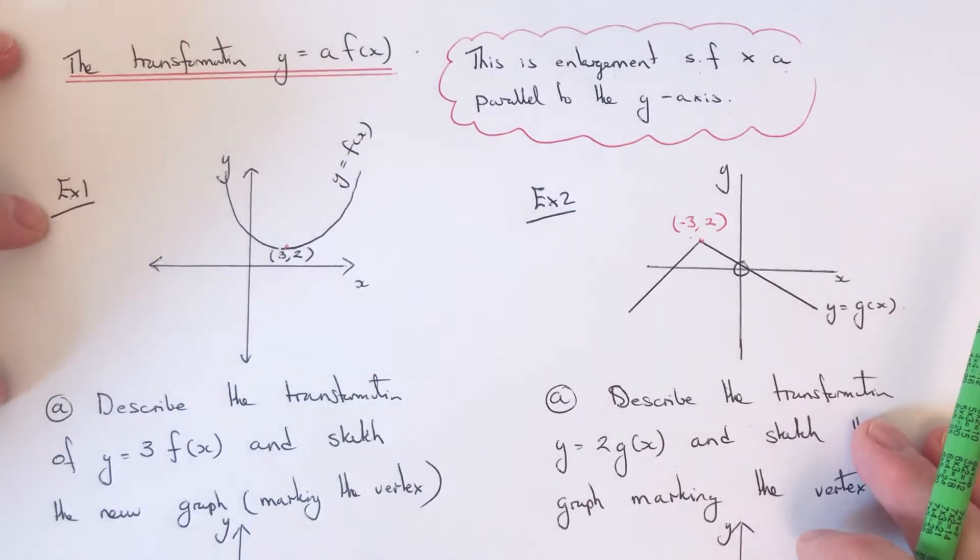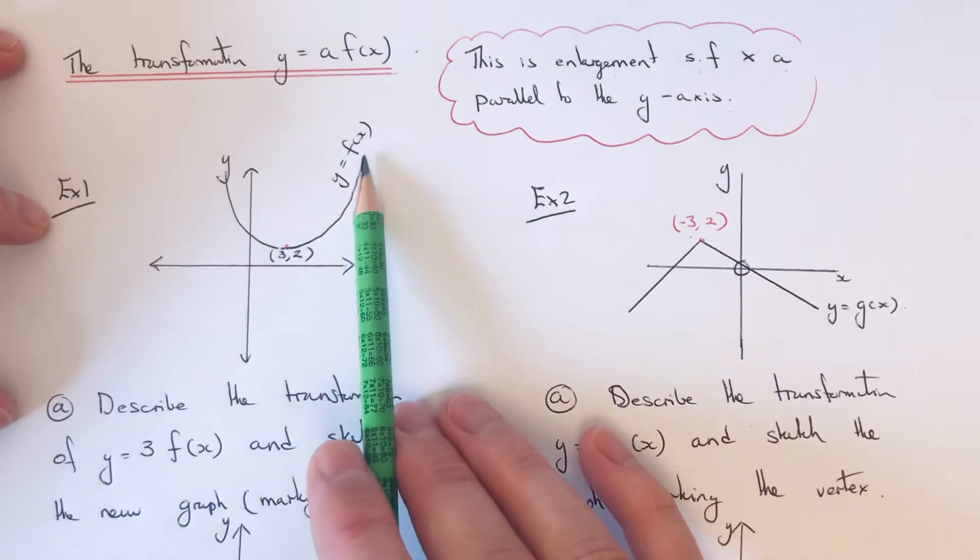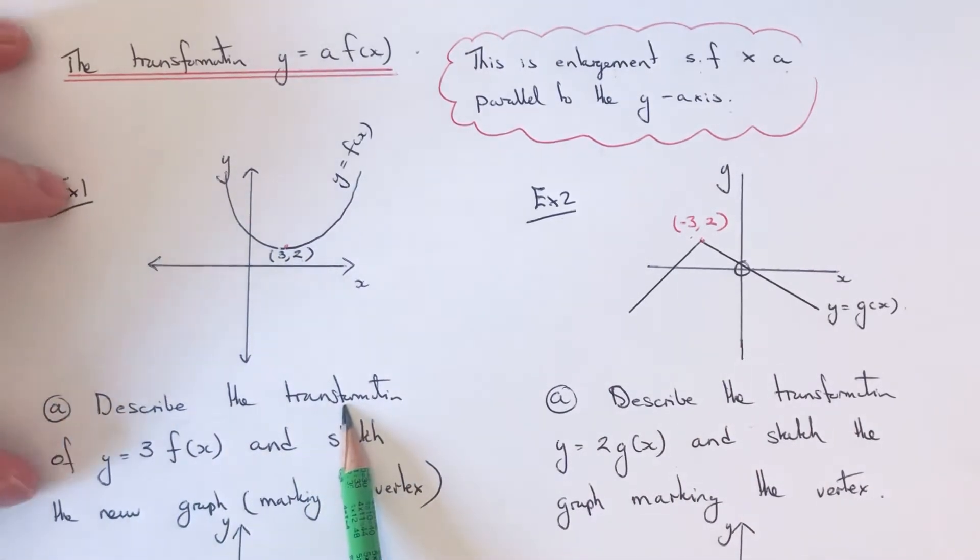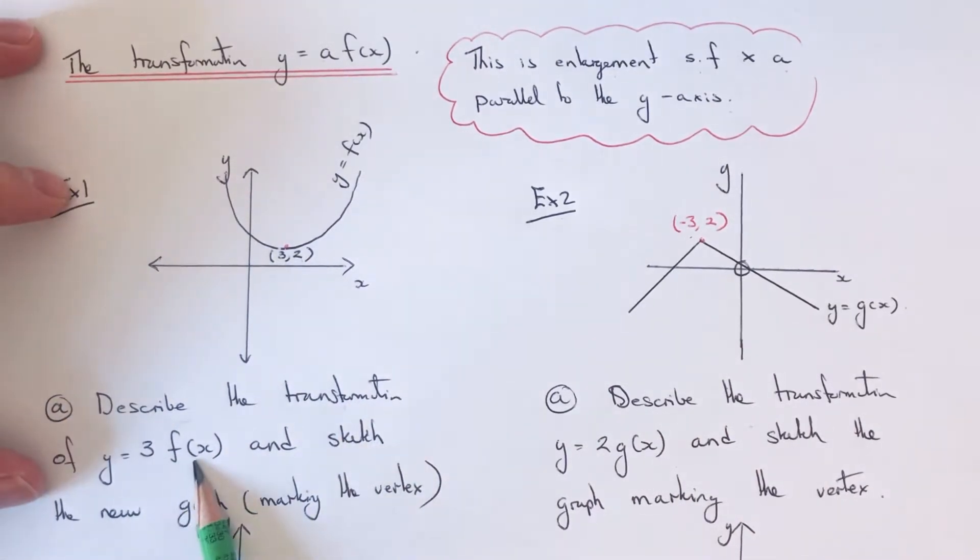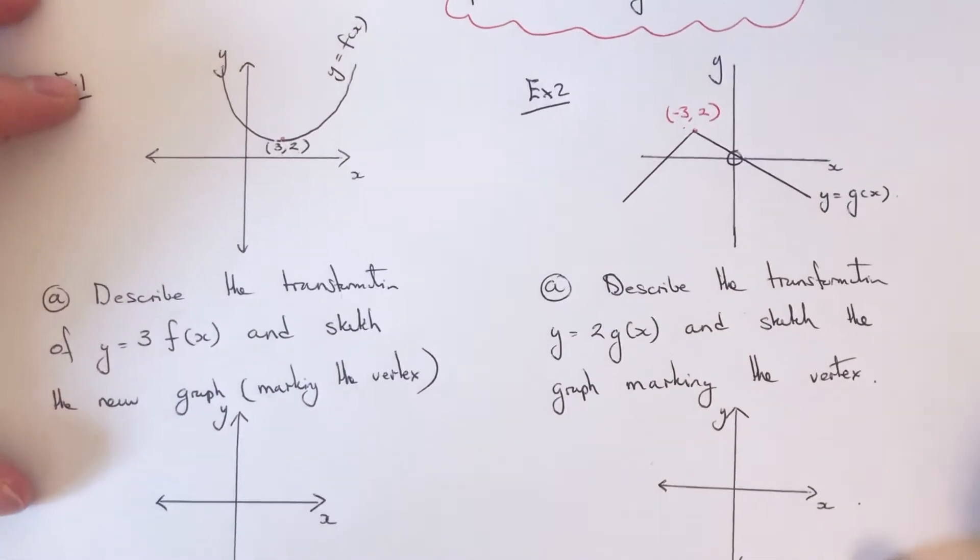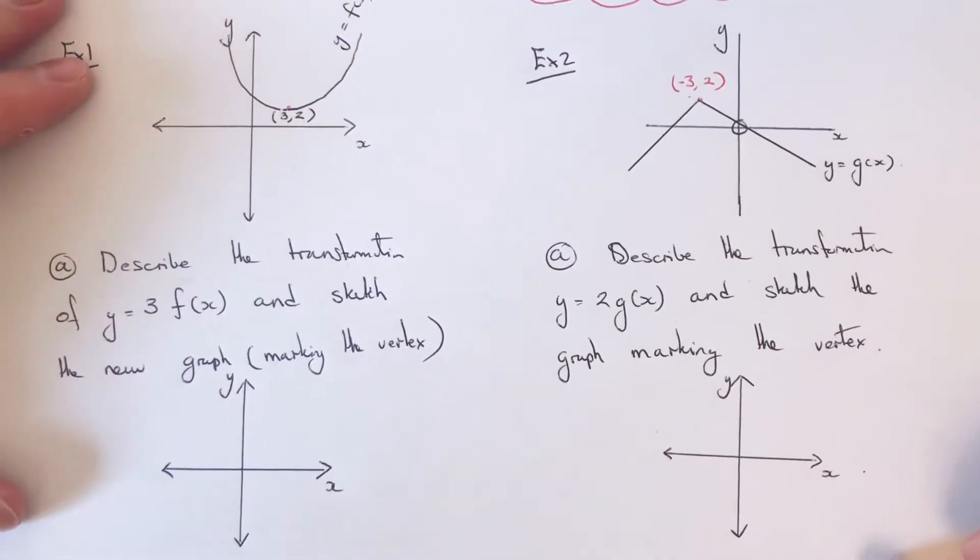First one, we've got y equals f of x with a vertex at 3 comma 2, and we've got to describe the transformation of y equals 3 f of x and sketch the new graph, marking the vertex.